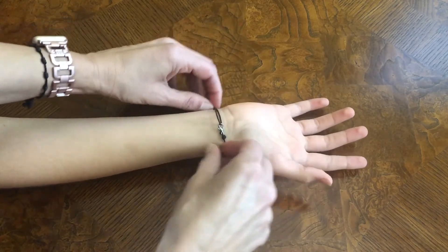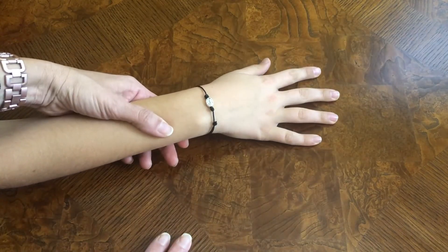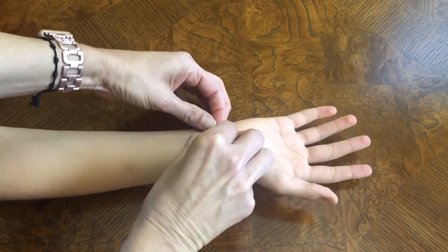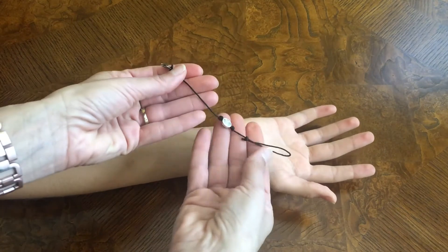You slide it until you get it into a comfortable position. Once it's in a comfortable position, you can see it's ready to go. Once you've adjusted it, you can just go ahead and unclip it and reclip it, and it should stay in that position and fit your wrist.